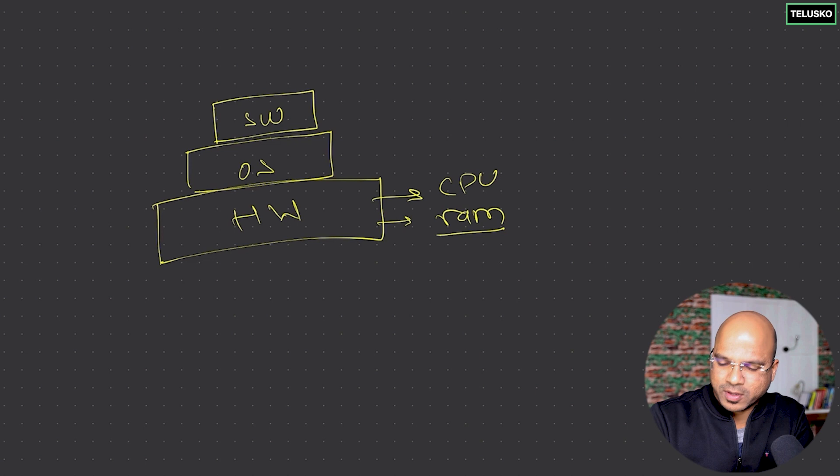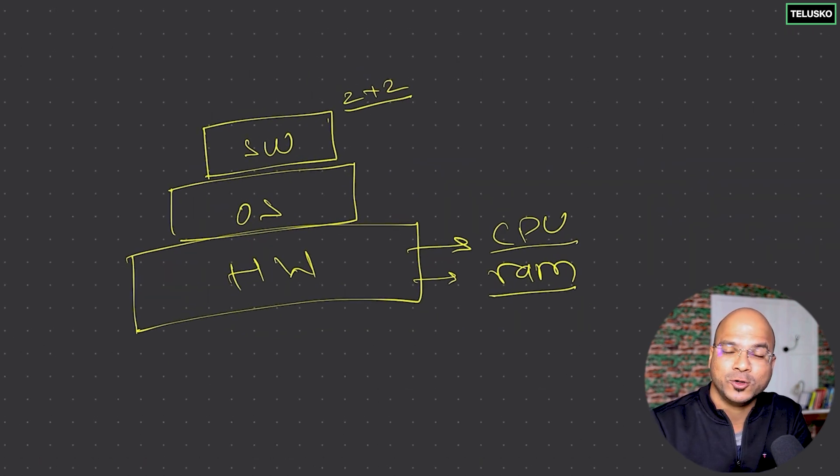If you talk about RAM, RAM acts like a temporary memory for your processing, and your CPU is basically something which executes. Let's say in your software, if you want to add two numbers—let's keep it very simple—if you say two plus two, that operation will go to OS and OS will say okay, you want to add two numbers, let me send the request to the CPU. CPU will do the processing, and then you got the output.